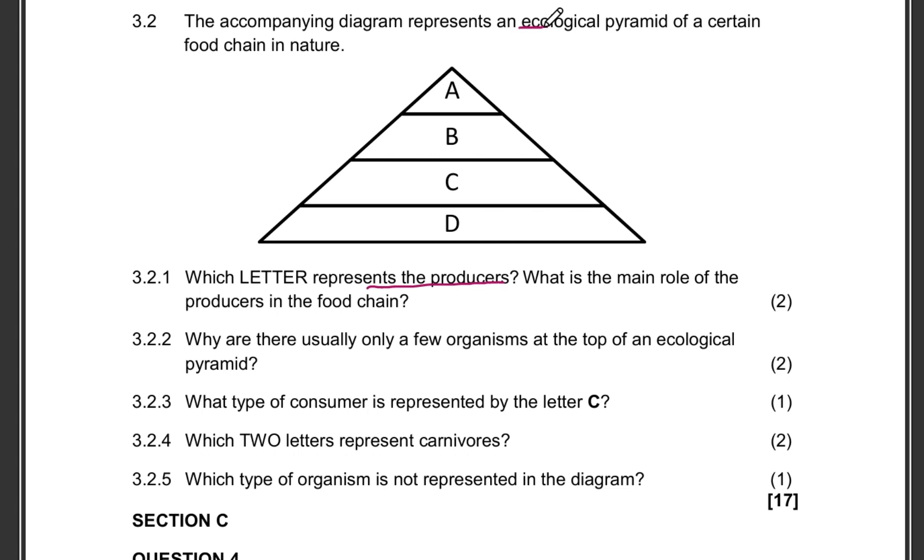So you are given an ecological pyramid of a certain food chain in nature. In this particular ecological pyramid, they didn't really give us the names of the organisms that are occupying each trophic level.